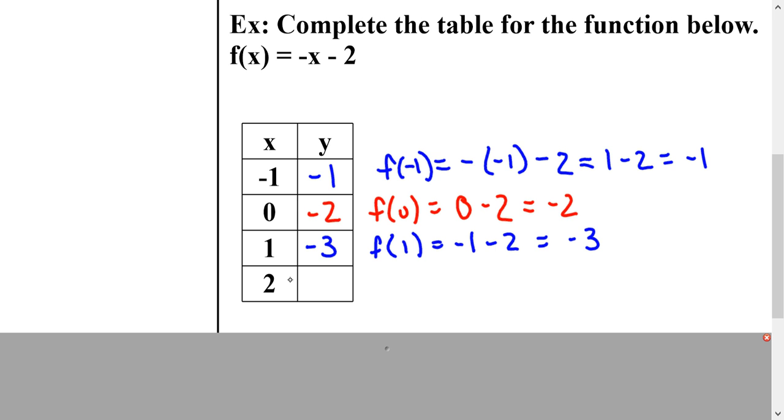And lastly, I have f(2). So that would be -2 - 2, which would equal -4. And the thing that's usually really cool about functions is you should be able to see a pattern in your y column. So just one -1, -2, -3, -4. So that would be how you complete a table for a function.